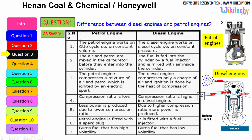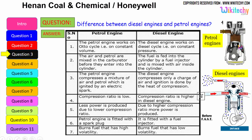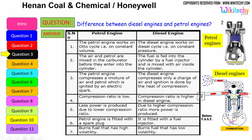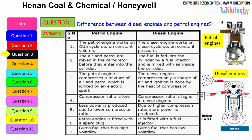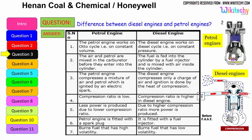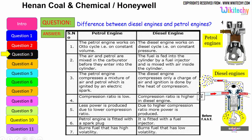The compression ratio in a petrol engine is low, whereas the diesel engine has a higher compression ratio. Less power is produced due to the lower compression ratio in petrol engines; higher compression ratio means more power is produced. The petrol engine is fitted with a spark plug, while the diesel engine is fitted with a fuel injector. Petrol burns fuel with high volatility — petrol is highly volatile — whereas diesel burns low volatility liquid; diesel is a low volatile liquid.